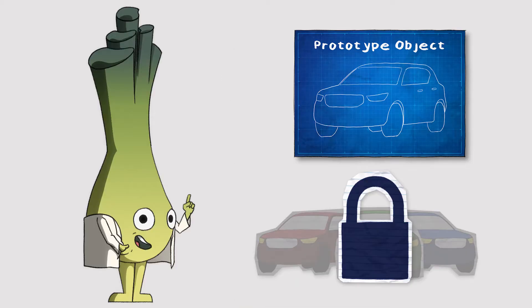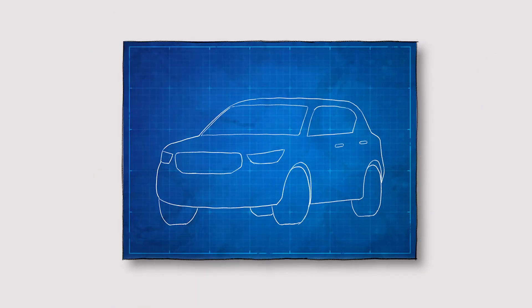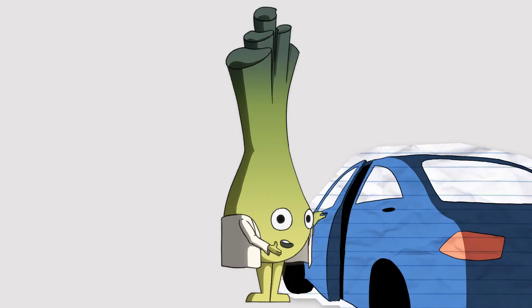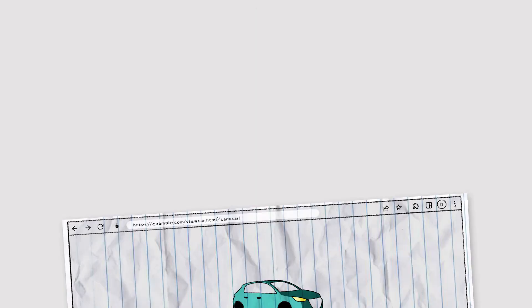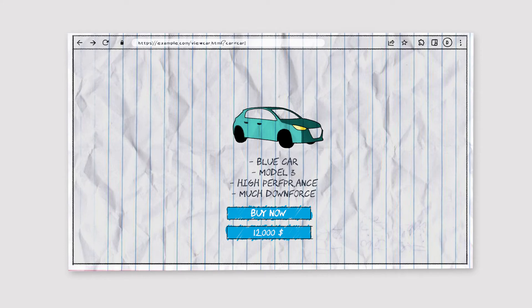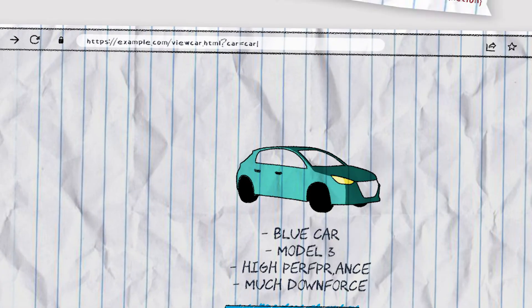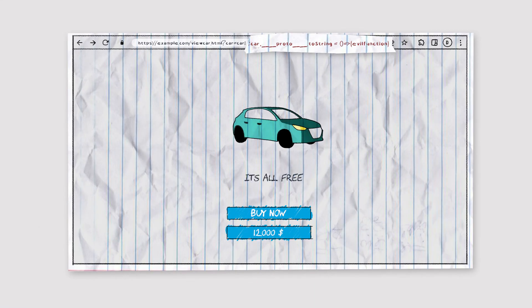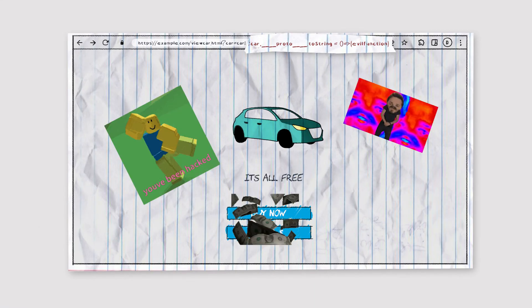So this is now the time where Prototype Pollution could come into place. If the application now allows us to manipulate the prototype object, we can now influence every other object that is created with this prototype or this blueprint. For example, our cars. Now we can add a function to the car which is not intended — for example, opening the car door whenever I want. When you want to apply the same principles to a website, we basically overwrite or add our own function that runs our own JavaScript on the server and basically gives us whatever we want.